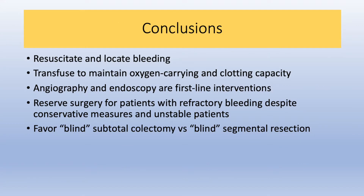In conclusion, the keys to management of massive lower GI bleeding are to first resuscitate and then to locate the bleeding. Crystalloid solution should be the initial resuscitation fluid, followed by blood products to maintain appropriate oxygen carrying and clotting capacity. Angiography and endoscopy are the first-line interventions. While most patients can be managed non-operatively, surgery should be done for patients with refractory bleeding despite conservative measures and unstable patients. Targeted surgery is preferred, but when a blind resection is needed, a subtotal colectomy is favored over a segmental colectomy due to recurrent rates of bleeding.